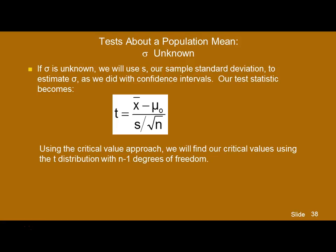It's important on these kinds of problems that you note carefully: do you know the population standard deviation sigma, or do you only know the sample standard deviation S? When you're using S, you have to use the T distribution. If you're using the critical value approach for your decision rule, this means that you'll find your critical values using the T distribution and the T table, rather than the standard normal table.